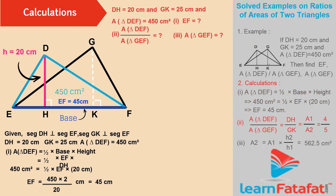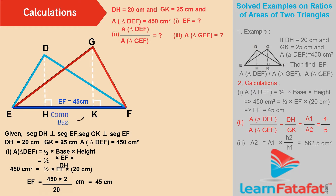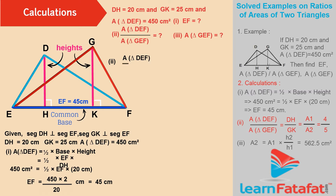Calculation for ratio of Area of Triangle DEF to the Area of Triangle GEF. The two triangles have a common base, so the ratio of areas of the triangles is equal to the ratio of their heights. Therefore, Area of Triangle DEF divided by Area of Triangle GEF is equal to DH divided by GK.